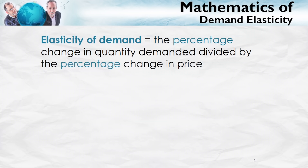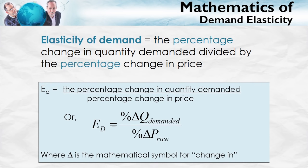Here's a more precise definition of elasticity. The elasticity of demand is the percentage change in quantity demanded divided by the percentage change in price. Delta is the symbol for change in. So this is the percentage change in the quantity demanded divided by the percentage change in the price. That's the elasticity of demand.